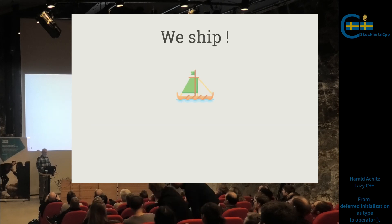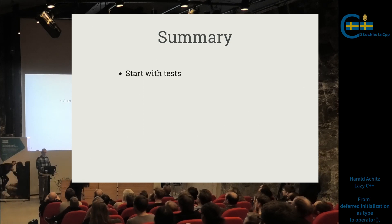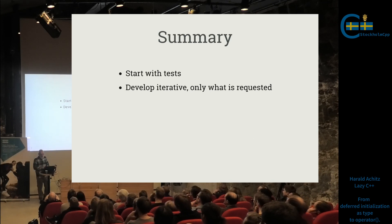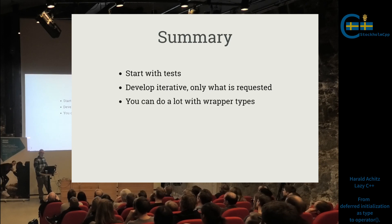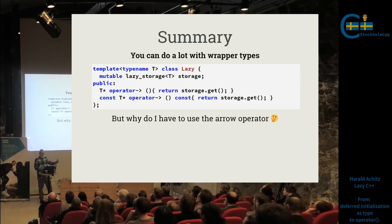We ship — done. No heap allocation, everything fine, and we have unit tests. Short summary: start with tests, develop iteratively and only build what is requested. Users always want something different from what you expect, so if you make libraries think about that. We can do a lot with wrapper types — lazy is one example. Going back, I gave a presentation about const as a type some years ago: same problem, just a wrapper, had to abuse the arrow operator.